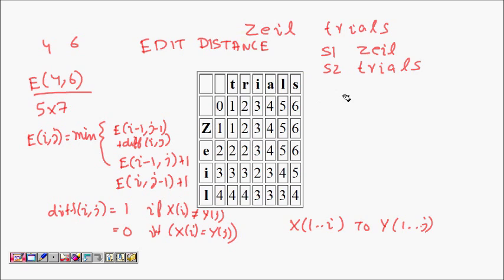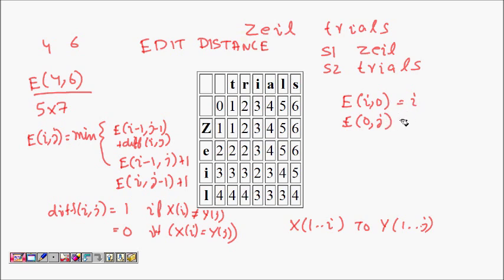e(i, 0) means I have a string of length i and I have to convert it into a string of length 0, so this equals i. Similarly, e(0, j) means I have a zero-length string and I have to convert it into a length-j string, so there will be j insertions — it equals j.